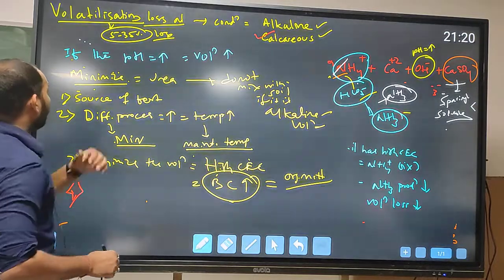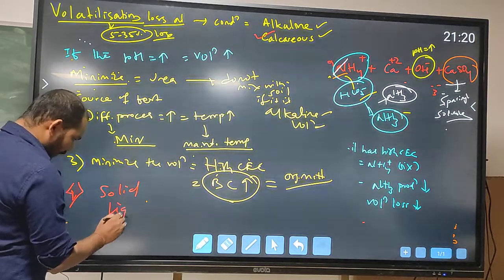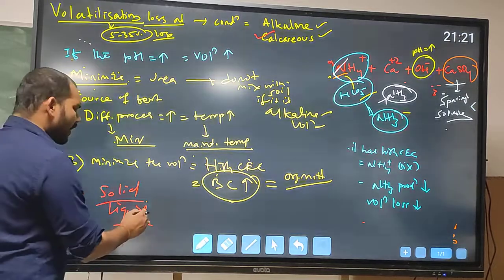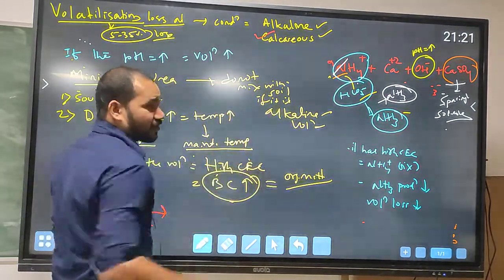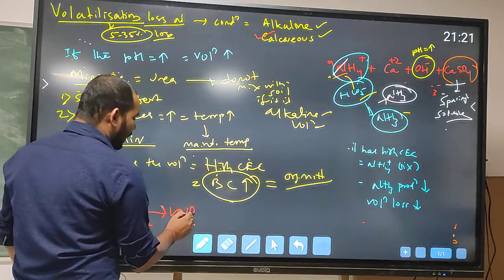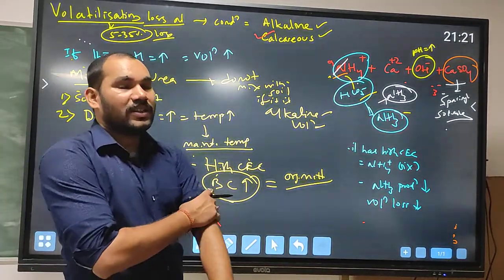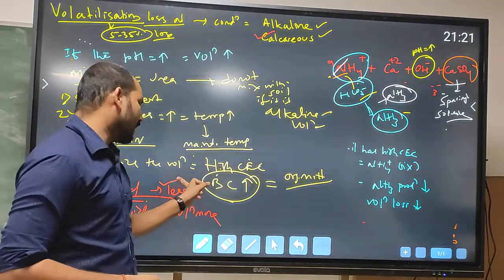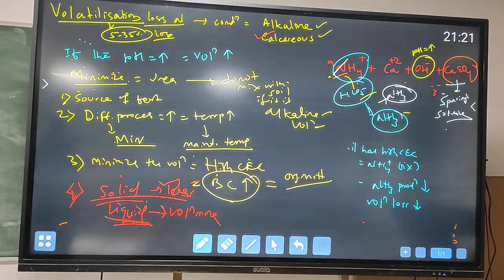There are two types of fertilizer application: solid and liquid. If we apply liquid fertilizer, the chemical reactions are quicker, so volatilization loss will be more. If we apply solid fertilizer, the reactions are slower, so volatilization loss will be less.